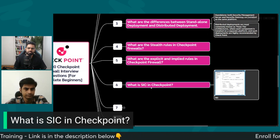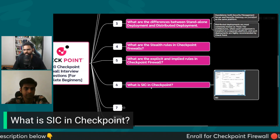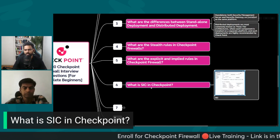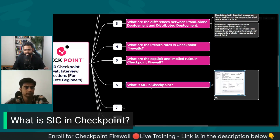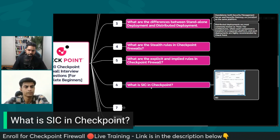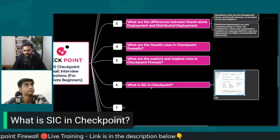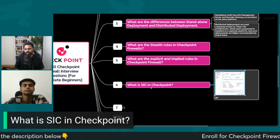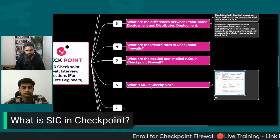SIC is completely encrypted communication between Checkpoint devices to share any sensitive information with the management station. All key management and encryption happens, and it also provides integrity checks. That's why it is called Secure Internal Communication.